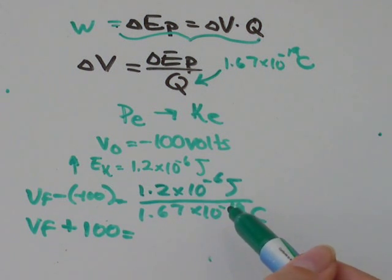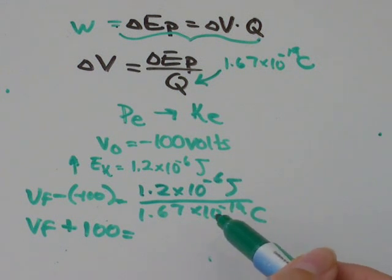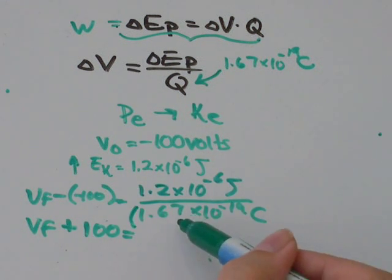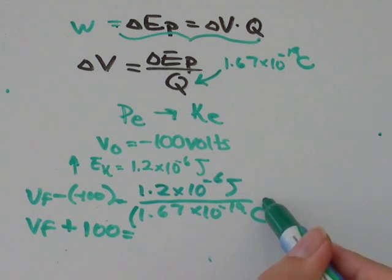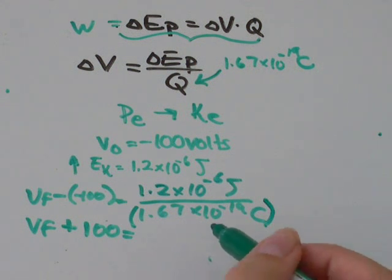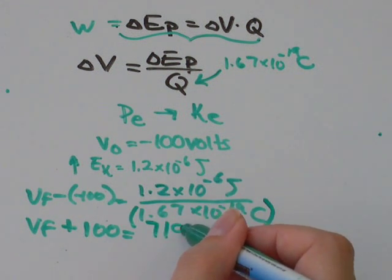So on your calculator, I would go 1.2 times 10 to the negative 6, divide by open bracket 1.67 times 10 to the negative 19, close bracket, and hit equals. And when I did that on my calculator, I got 719.